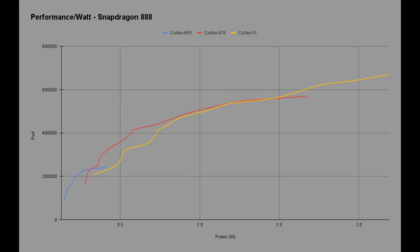The Cortex-X1 is the yellow line here. You can see it's offering more power usage, because it is the more powerful CPU. But it very quickly goes up and starts taking over in performance. You'd want to stay on the Cortex-A78 until the crossover point — there's a parallel region where you're getting roughly the same performance for the same amount of power. And then ultimately, the Cortex-X1 goes away on its own, leaves the Cortex-A78 behind, and that's where you get the maximum performance — but you are still using more power.